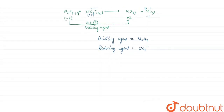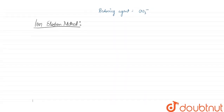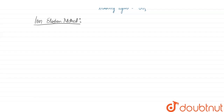Now we have to balance the equation by the first method, that is the ion electron method. In the ion electron method, first we have to identify the half cells — that is, the oxidation half cell.